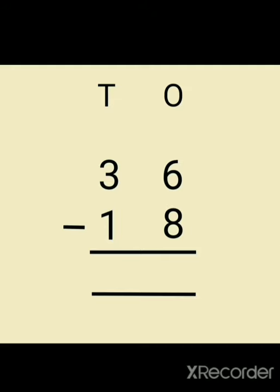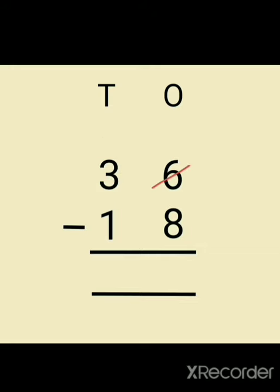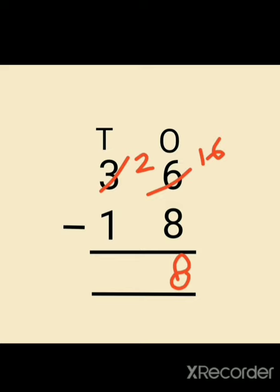Let's take another example: thirty six minus eighteen. Starting from the right hand side, six minus eight is not possible as six is less than eight. So six will take one borrow from three — it will become sixteen and three will become two. Now sixteen minus eight will be equal to eight, and two minus one will be equal to one. So the answer will be eighteen.